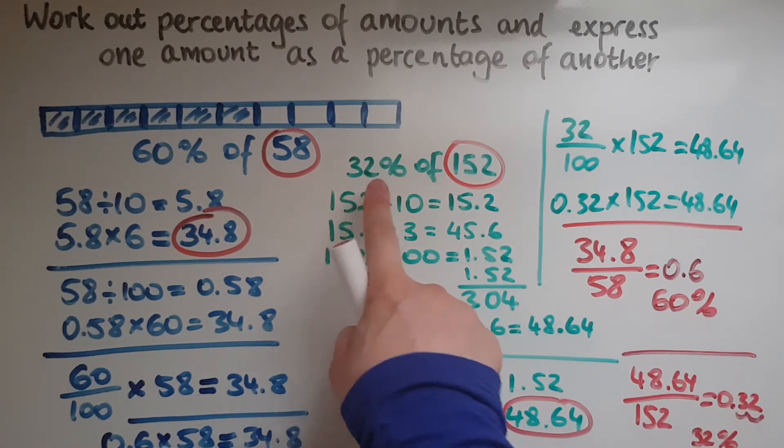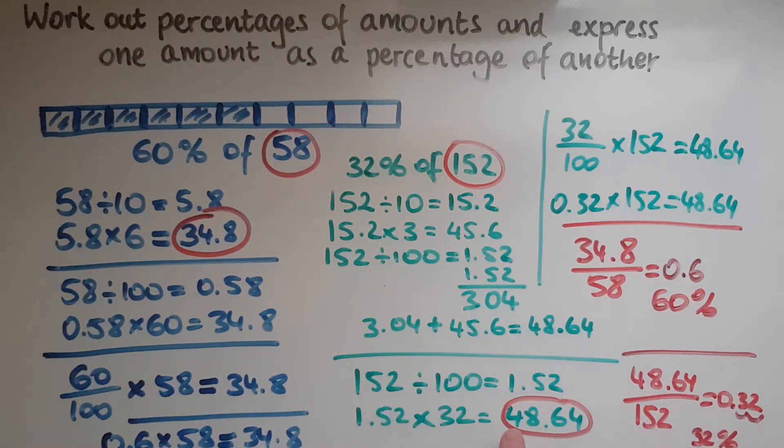So that is 32%. And that is exactly what we had to begin with. So we worked at 32% of 152. That was 48.64. Now we're reversing the process.